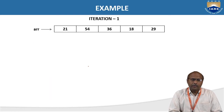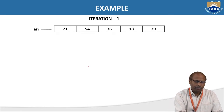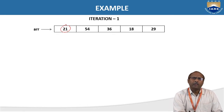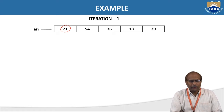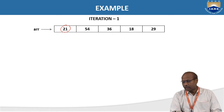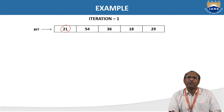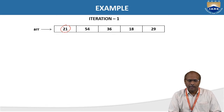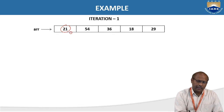You can take a small example here. Assume you have the data: 21, 54, 36, 18, 29. The biggest element is 54, so after the first iteration, 54 will go to the end of the array. The indices are: zeroth index, first index, second index, third index, fourth index.